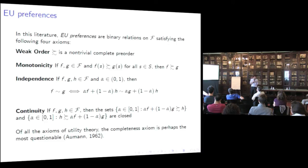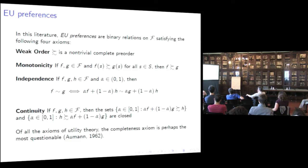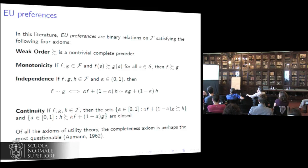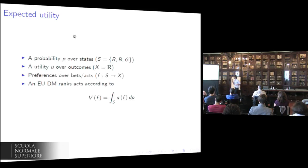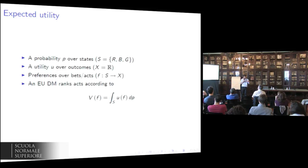We discussed the expected utility model at the beginning — what are the axioms characterizing it? Monotonicity, which we just discussed. Independence, now required across all acts rather than just constant acts. And continuity, the same form as before. The probability is subjective — revealed by the behavior of the decision maker, by the binary relation — and you can represent the binary relation with it.